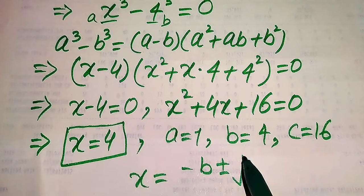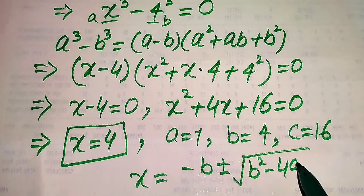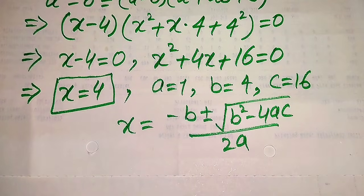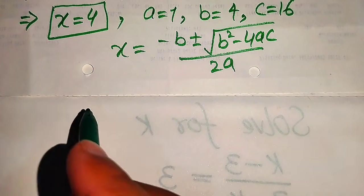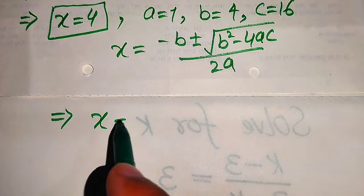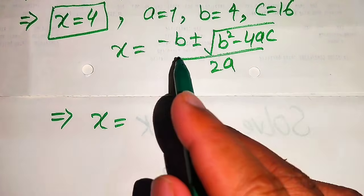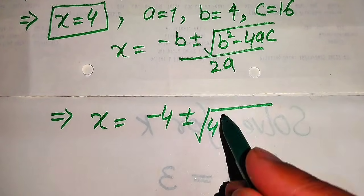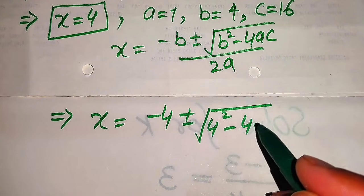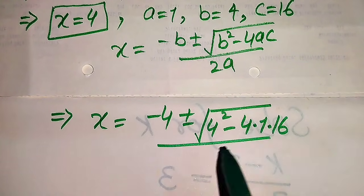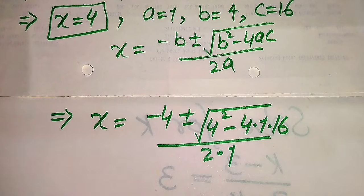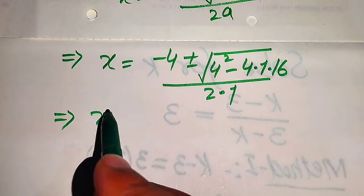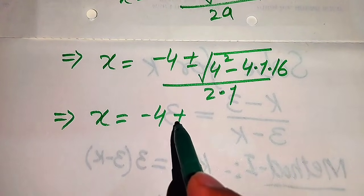The quadratic formula is: x = (−b ± √(b² − 4ac)) / (2a). Now we substitute the values of a, b, and c. After substituting, it will be written as: x = (−4 ± √(4² − 4 × 1 × 16)) / (2 × 1).